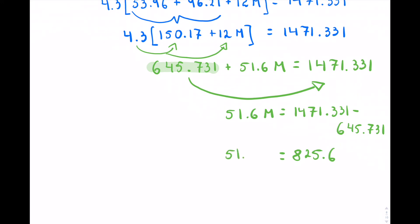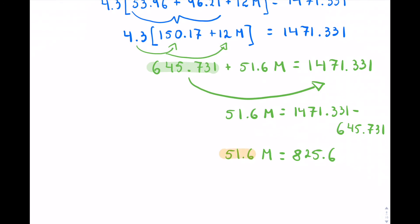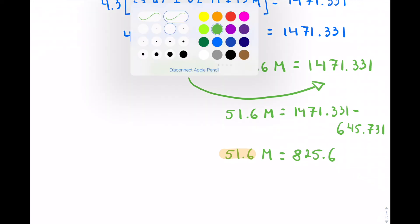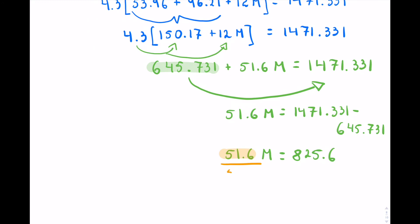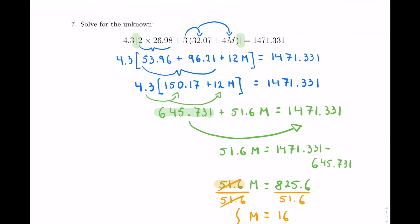And that only leaves me now with this 51.6 in front of the M. So it's a factor. To get rid of the factor, we will divide both sides so that factor cancels. And now with the division, we will get 16, and that is your final answer for this example.